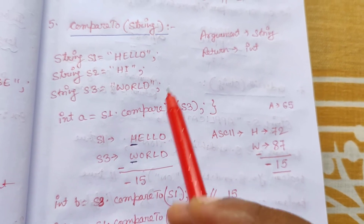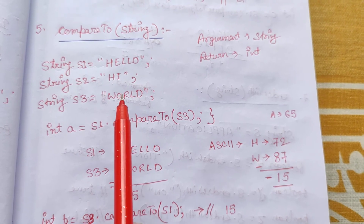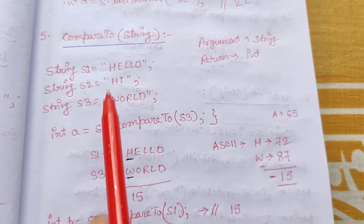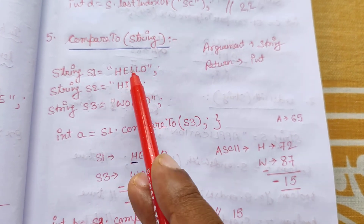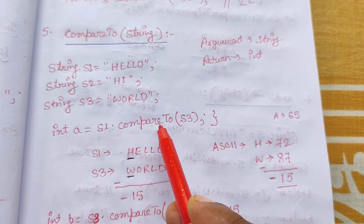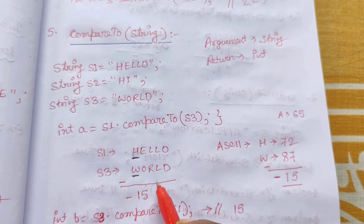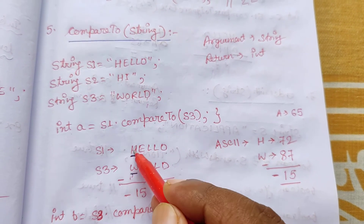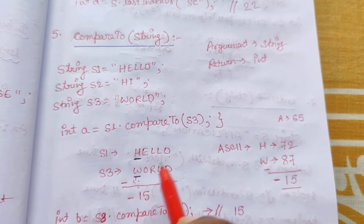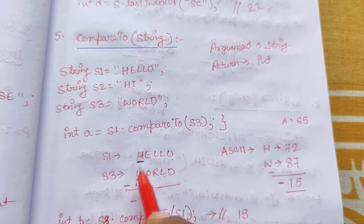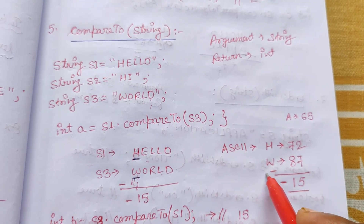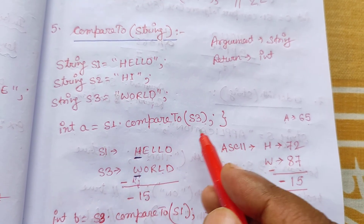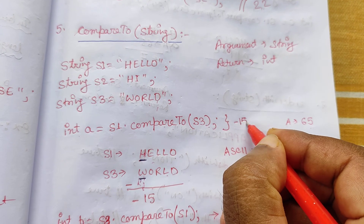Next function is compareTo(). It is used to compare two strings and returns the subtraction of ASCII values between two strings — either a negative, positive, or zero integer. Suppose s1 = "hello", s2 = "hi", s3 = "world". int a = s1.compareTo(s3): compare 'hello' and 'world'. The first characters 'h' and 'w' don't match. ASCII of 'h' is 72, ASCII of 'w' is 87. So 72 - 87 = -15. Answer is -15. s3.compareTo(s1) gives +15.